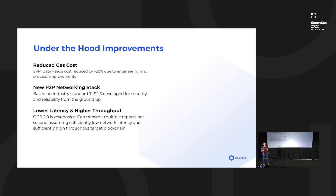OCR 2 also includes several under-the-hood improvements. Gas cost has been reduced by roughly 25 percent compared to OCR 1. There is a completely new peer-to-peer networking stack built from the ground up for reliability and security, based on the industry standard TLS 1.3. Protocol design modifications have also lowered latency and increased throughput — the protocol is now responsive, bounded only by underlying network performance and blockchain throughput, allowing multiple reports per second in principle.